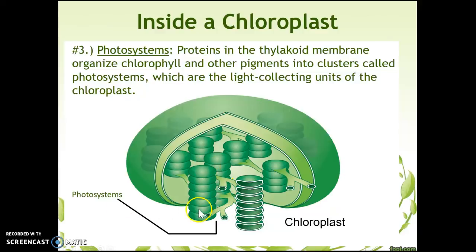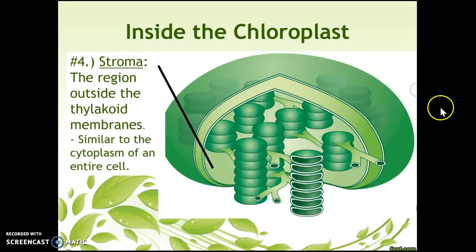In between the grana we have our photosystems. Photosystems are proteins in our membranes that organize chlorophyll and other pigments into clusters — these are the light-collecting units of the chloroplasts. Chlorophyll is what gives the chloroplasts their green color; without chlorophyll our plants wouldn't look green. Chlorophyll is our main pigment and it actually does the trapping of the light. Lastly, we have the stroma — the region outside the thylakoid membranes and photosystems, similar to the cytoplasm of the cell.